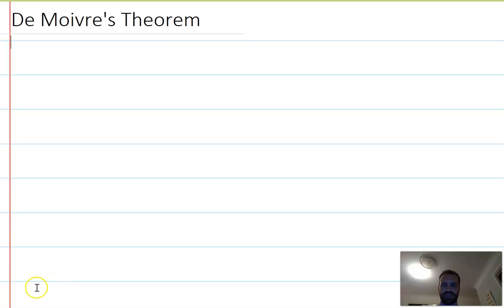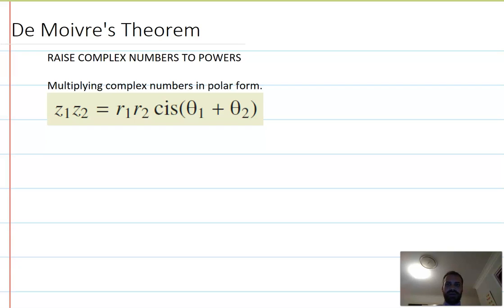So welcome to De Moivre's theorem, which lets us raise complex numbers to powers. You might already be able to figure this out, because we already know how to multiply two complex numbers together in polar form. Here's our formula for multiplying complex numbers in polar form. What happens if we're raising to the power, say the power of 2 or the power of 3? Let's just try raising to the power of 2.